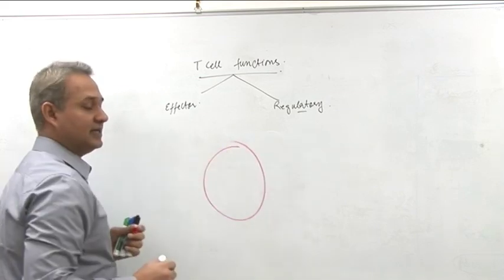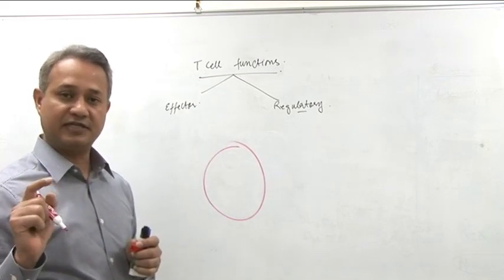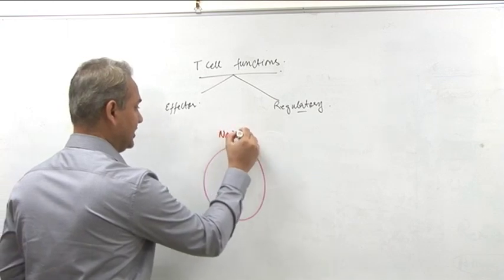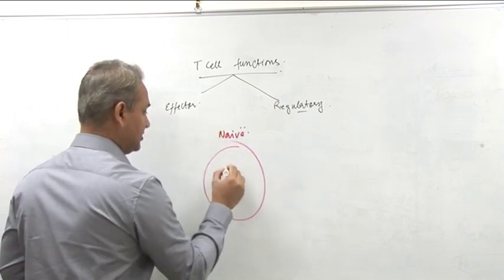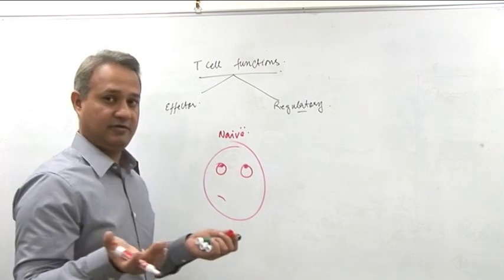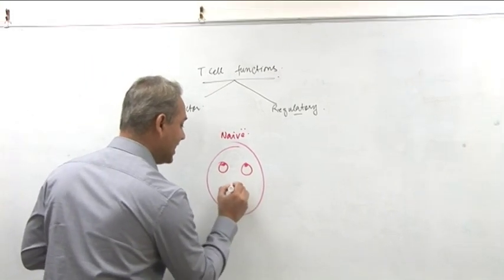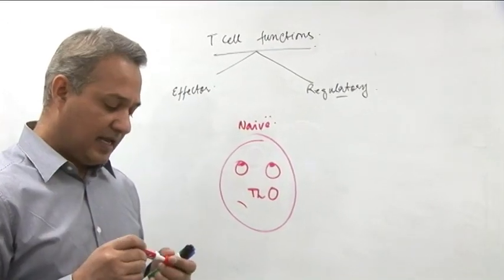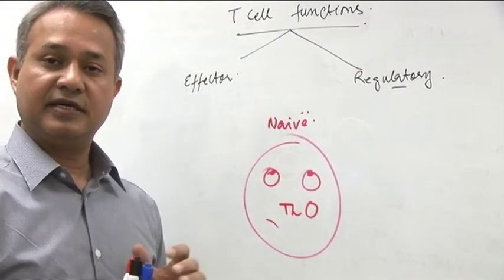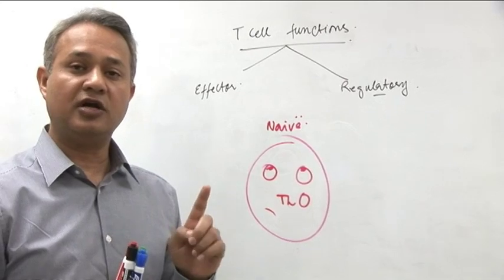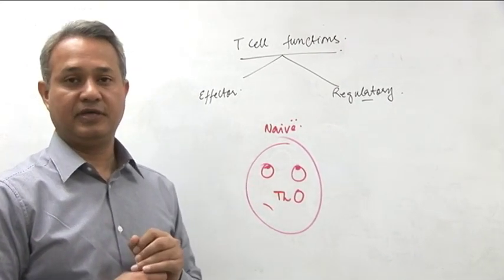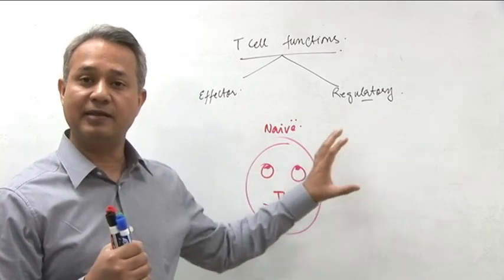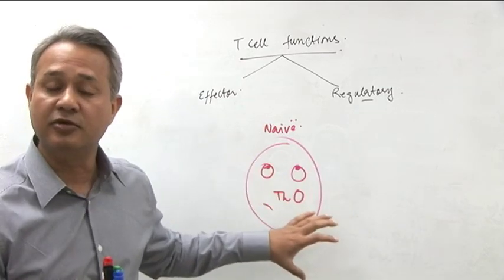T-cells, when they come out of the thymus, are naive T-cells. They are naive helper T-cells, called T-helper zero, because they have not yet become activated. T-cells are dynamic in their behavior. Their commitment towards one type or another can be changed by influencing them through chemical substances — a discussion we had in the early part of immunology lectures.